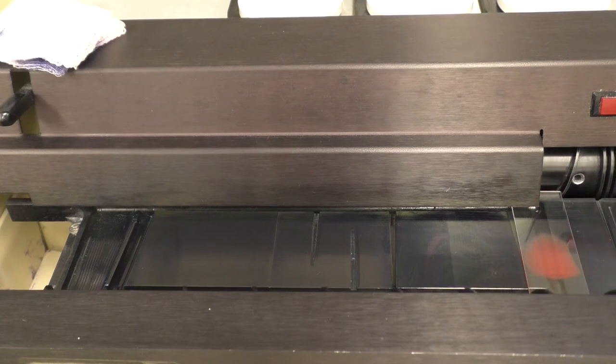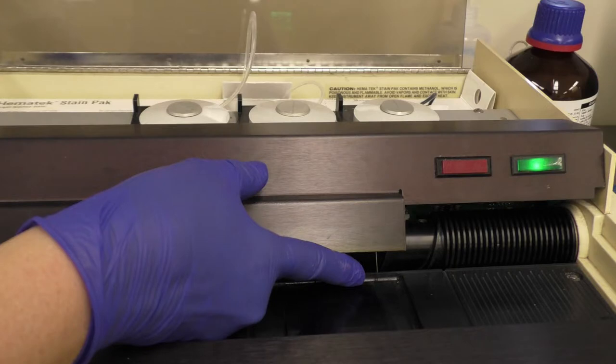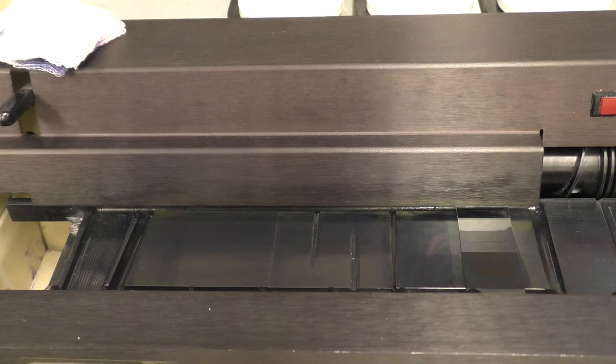The leading edge of the slide moves into contact with the stain-sensing switch finger that activates the stain pump. The stain is then delivered through a cannula and tube network to the platen orifice. The capillary space between the undersurface of the slide and the platen is filled with stain.